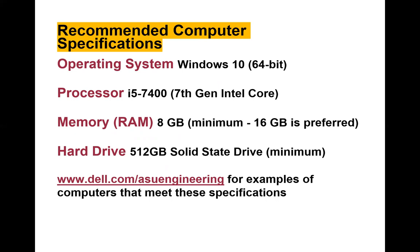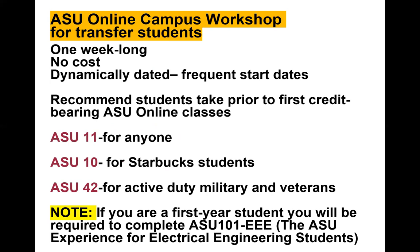There is an ASU Online campus workshop for transfer students — one week long, no cost, with frequent start dates. It is recommended to complete prior to your first credit-bearing ASU Online class. Most students take ASU 11; Starbucks students with tuition covered take ASU 10; active duty military or veterans take ASU 42. If you are a first-year student or first-time freshman, you will be required to complete the one-credit ASU 101-EE — the ASU Experience for Electrical Engineering students — and you do not need the workshop since much of that information is covered there. ASU 11, 10, and 42 are for transfer students with 24 or more transfer credits.